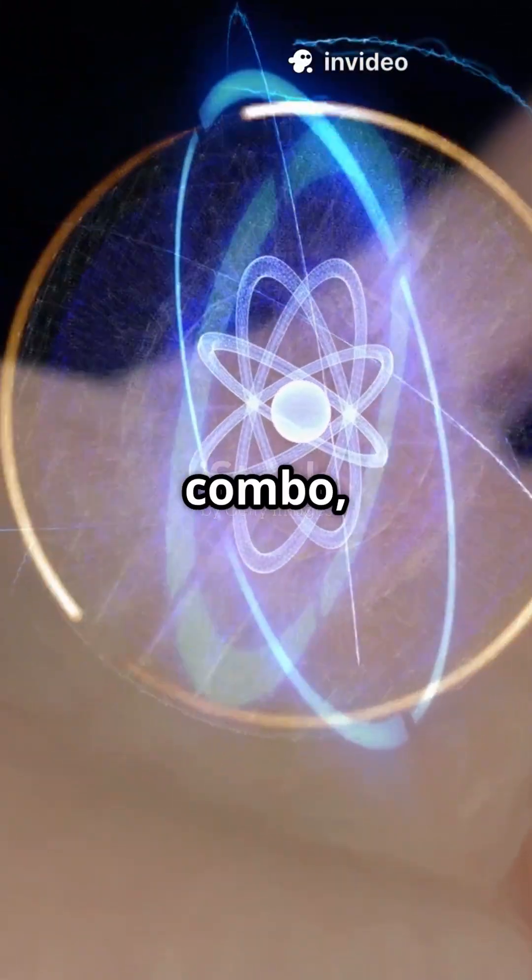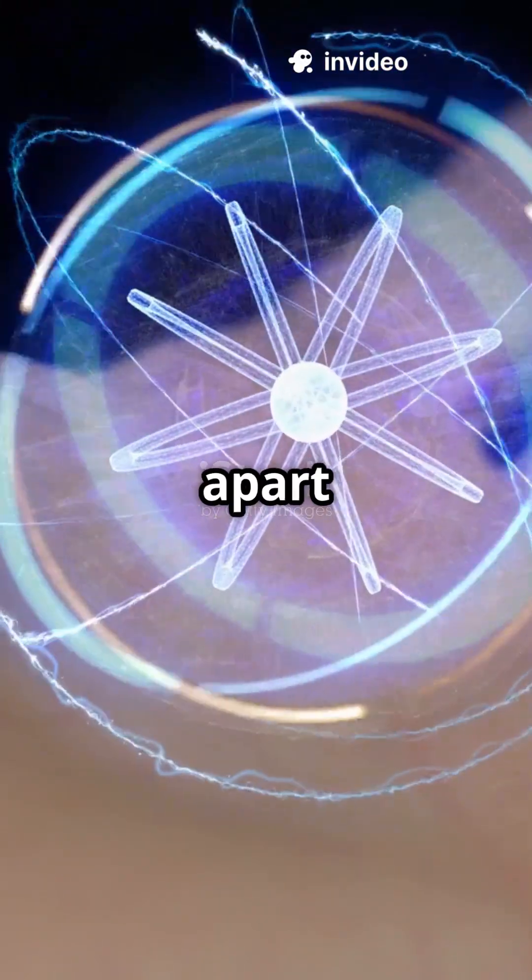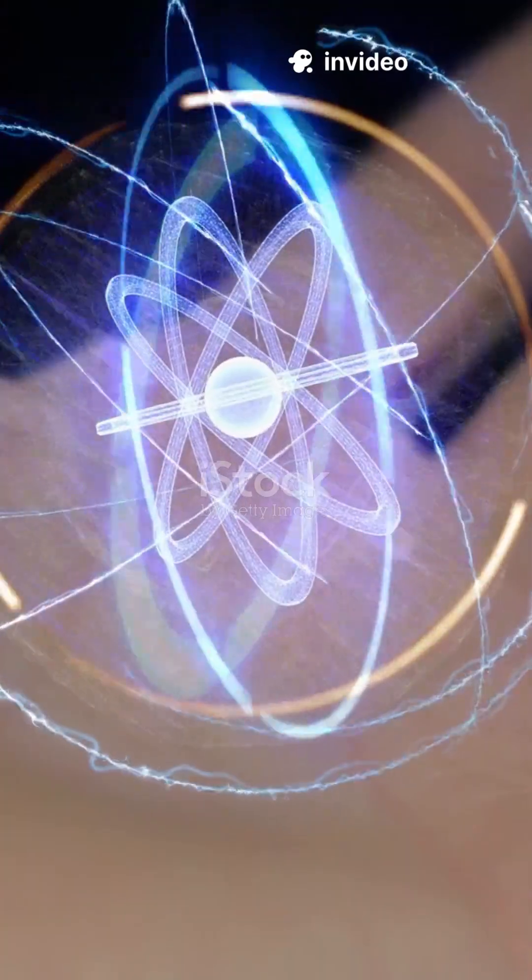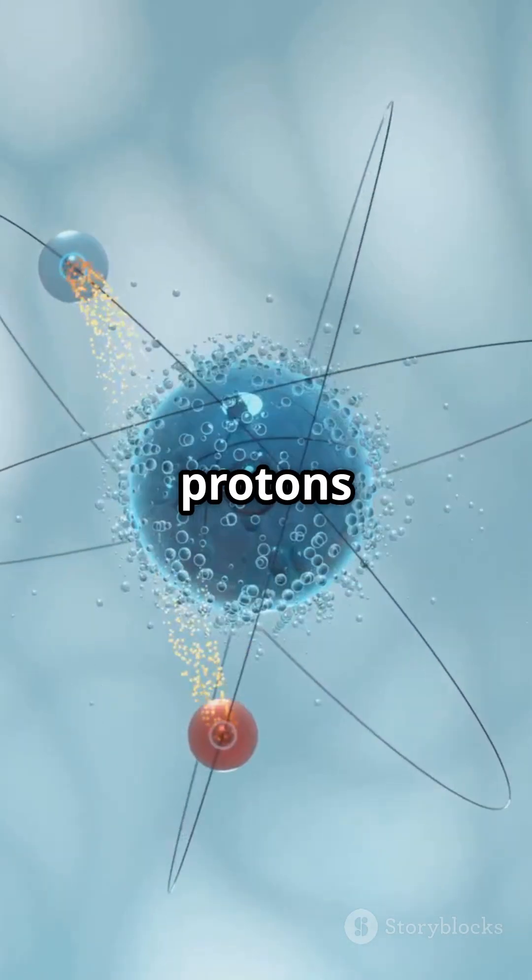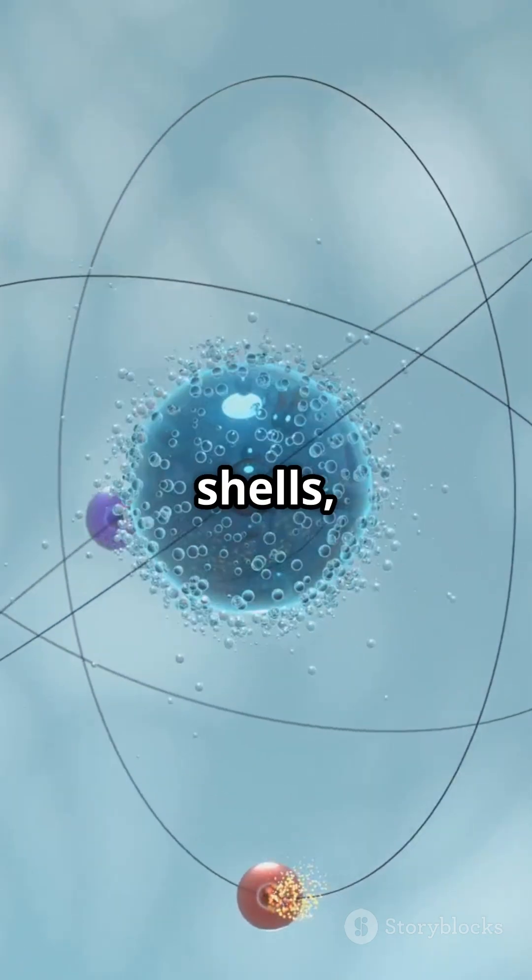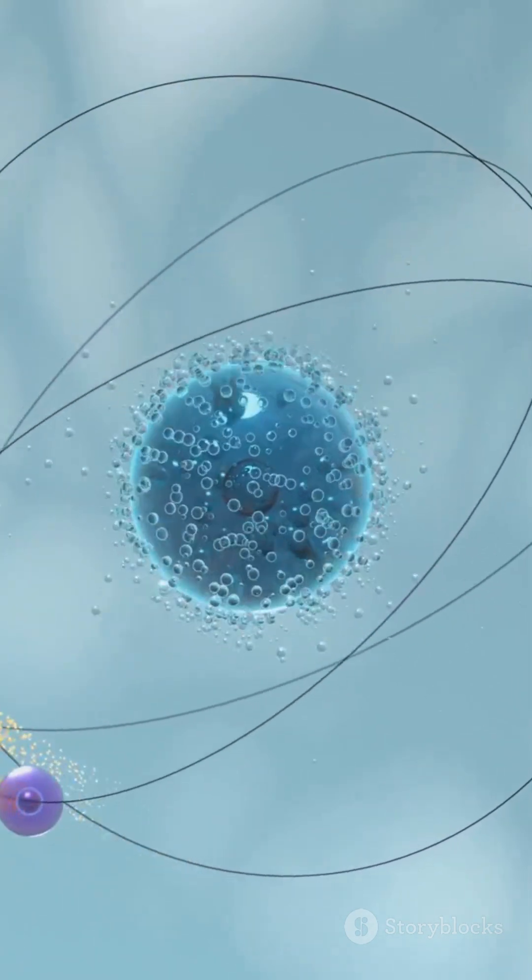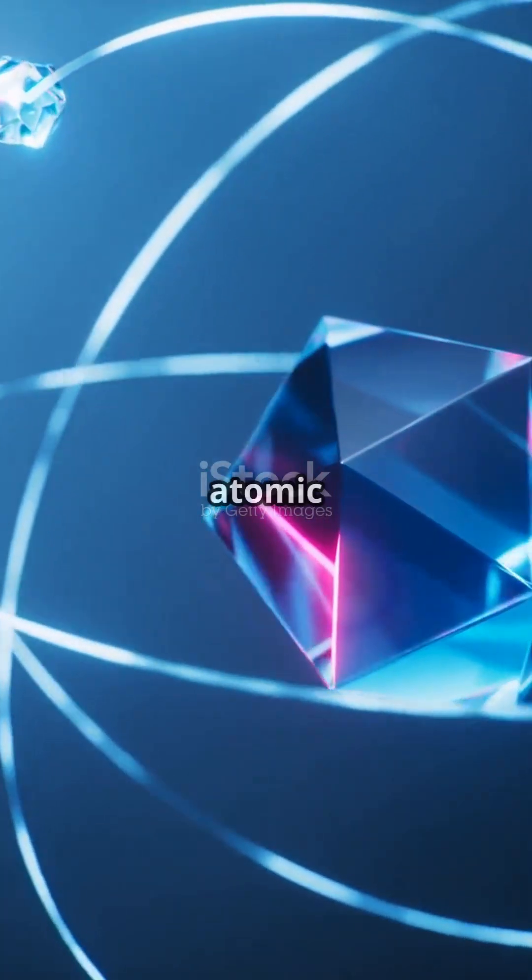But if you're missing the right combo, your atom might fall apart in no time. It's all thanks to the nuclear shell model. Imagine protons and neutrons filling up energy shells just like electrons do. Fill those shells and voila, atomic magic.